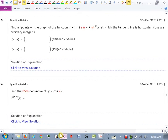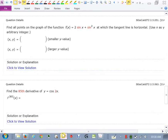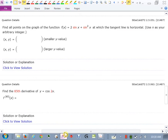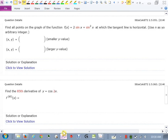Okay, find all the points on the graph of the function 2 sin x plus sin squared x at which the tangent line is horizontal. Use n as an arbitrary integer. So when we say we want the tangent line to be horizontal, that means we want to know when the derivative of this function is 0. Slope is 0. So what I need to do is I need to take the derivative of the function.